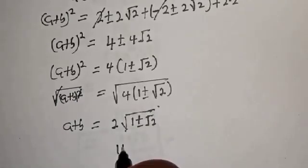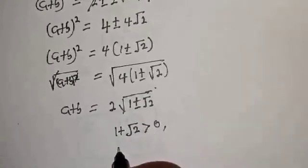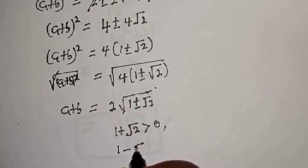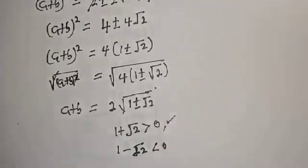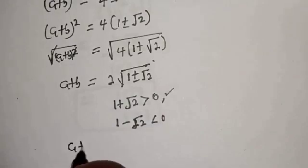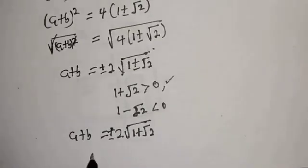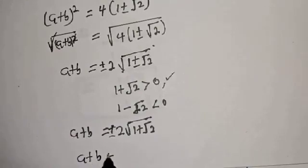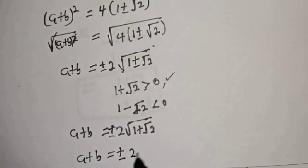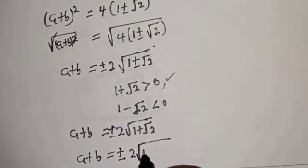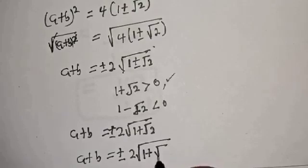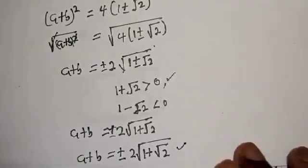Note that 1 plus root 2 is greater than 0, but 1 minus root 2 is less than 0 — so we only consider the valid case. Therefore, a plus b equals plus or minus 2 times the square root of (1 plus root 2). This is the final answer.